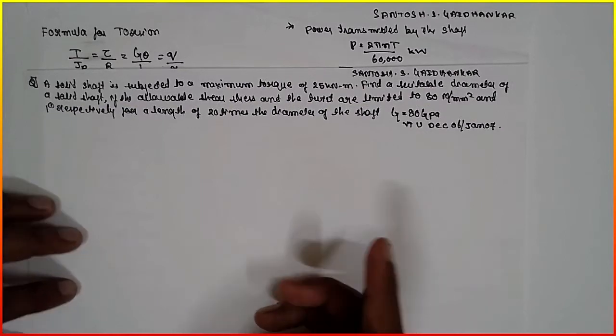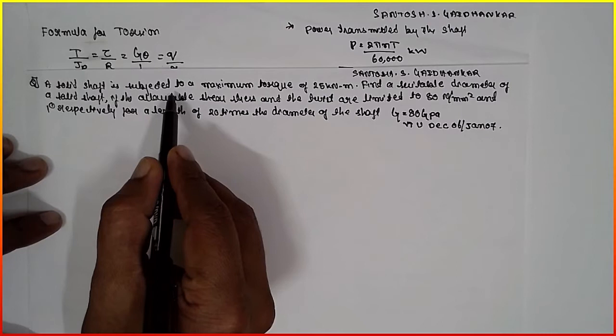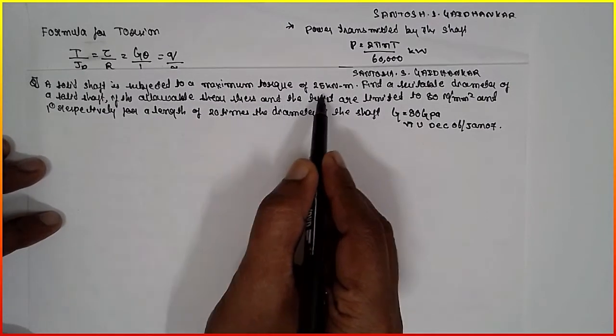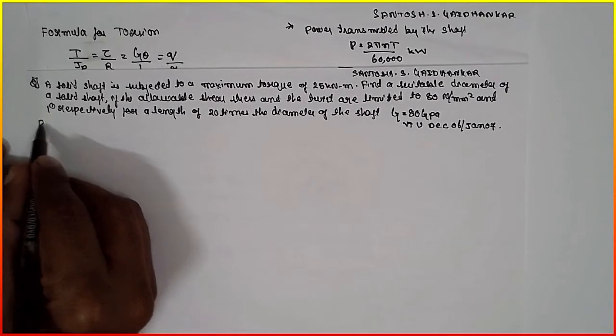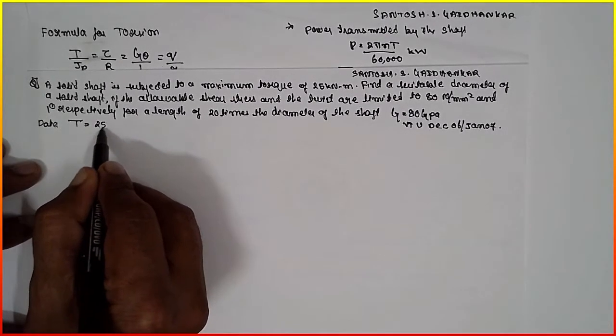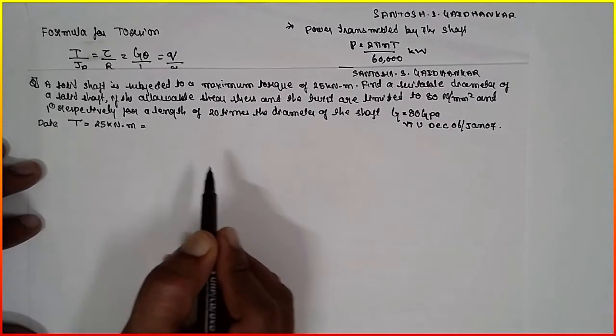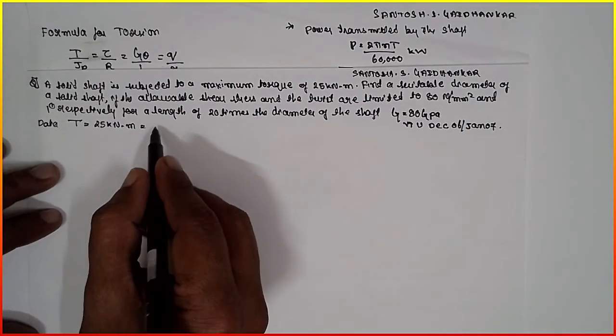I am Sandhush Gazankar and today I am teaching you mechanics of materials, specifically torsion. A solid shaft is subjected to a maximum torque of 25 kNm. Torque is given here as data: T is given as 25 kNm.